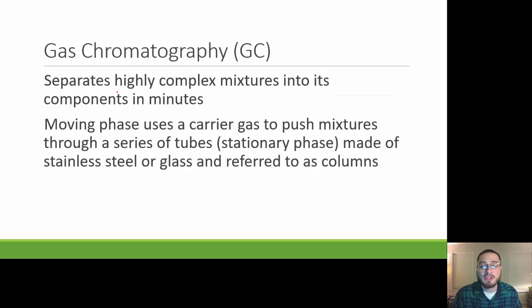When we talk about gas chromatography, similar to paper chromatography, we are separating those mixtures into its components. It separates highly complex mixtures into components in minutes. We have a moving phase, which is a carrier gas. We need to take our sample and put it into a carrier gas to push the mixtures through a series of tubes, which are fixed phase or stationary phase made of stainless steel or often glass, referred to as our column. We have our moving phase, which is our gas, moving through our fixed or stationary phase, which are our columns. That is how we're separating these mixtures. The different components of the mixtures are going to move at a different rate, and that's how we're going to separate the different components of that mixture.